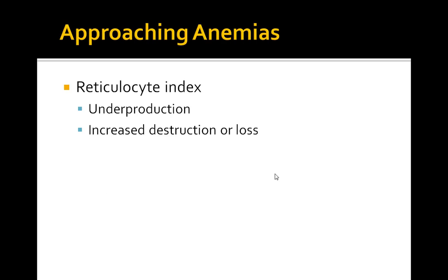The reticulocyte count is important in approaching anemias. If it's less than 2%, you're looking at underproduction, and your differential should focus on the MCV. A low MCV indicates microcytic anemia, a normal MCV is normocytic, and a high MCV is macrocytic.